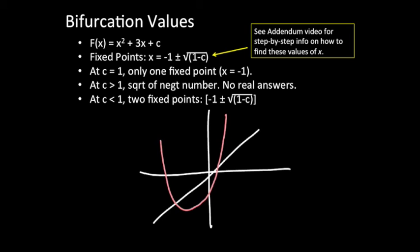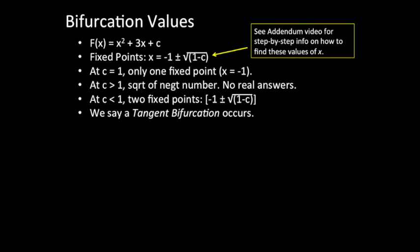A tangent bifurcation is occurring. In this particular case, that means that when the bifurcation value is reached, the parabola, the graph of the DDS itself, is actually tangent to the y equals x line. That's what a tangent bifurcation is.